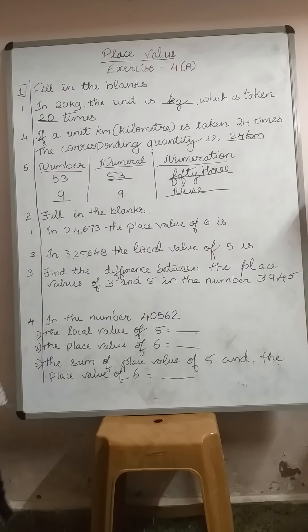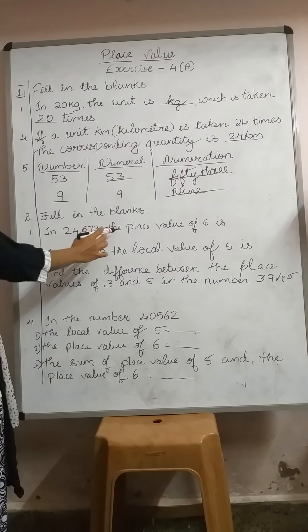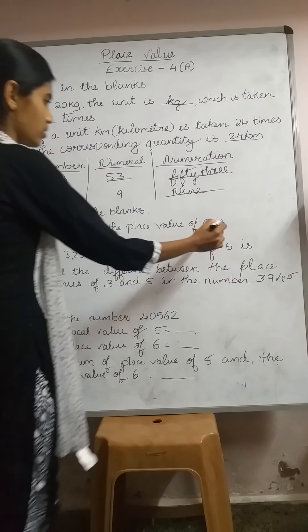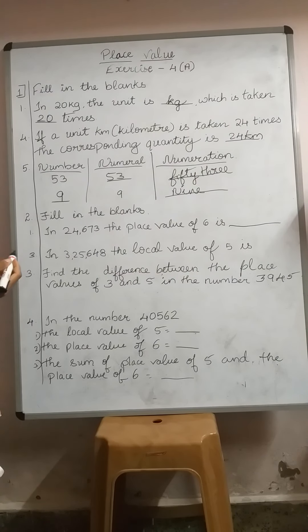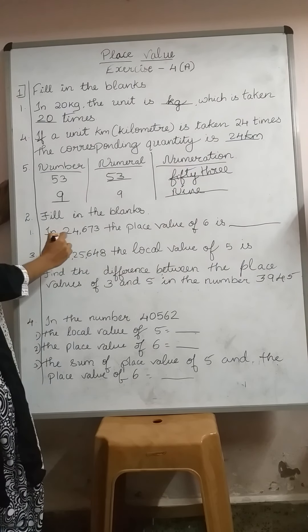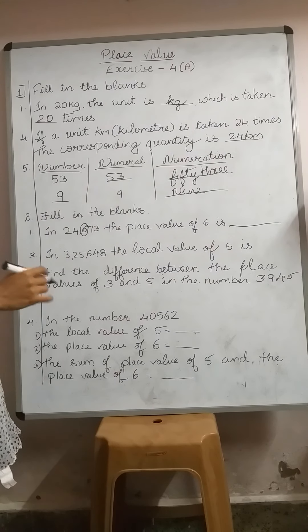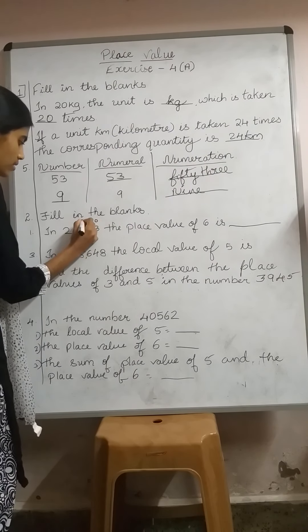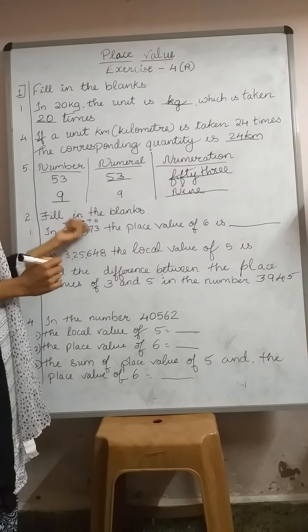Now we have fill-in-the-blanks. In 24,673, the place value of 6 is dash. Let us find out. Find 6 in 24,673 and circle it. Now, let us write the place positions: 1's, 10's, 100's, 1000's, 10,000's. We can clearly understand that 6 is in the 100's place.